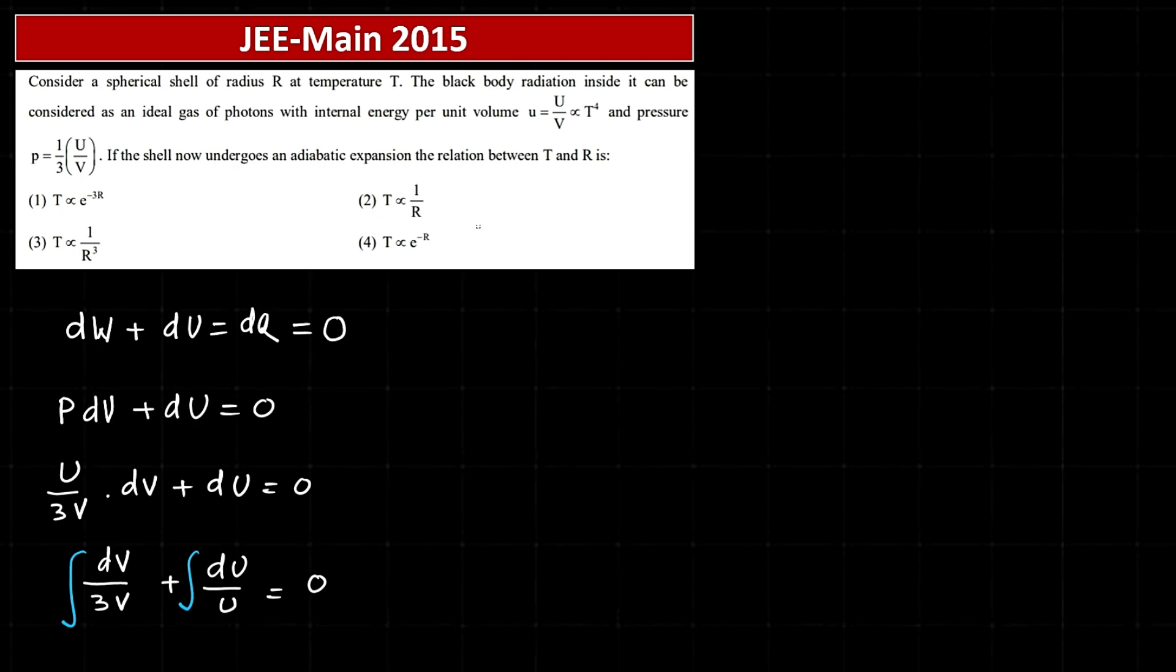So this integral will give me 1 by 3 ln V plus ln U, and let me call that constant of integration, say ln C. This 1 by 3 ln V can be ln V to the power 1 by 3, so I can write directly ln V to the power 1 by 3. Now apply ln a plus ln b equals ln ab.